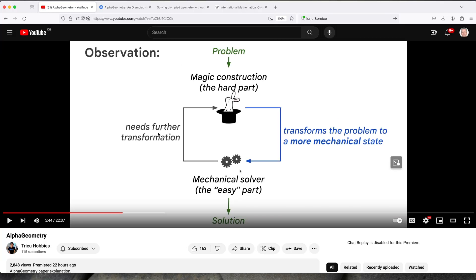From here, from the easy part, if it needs further transformation, it goes into here. If not, it can go straight into the solution. Let's talk more about this magic construction, this rabbit idea.